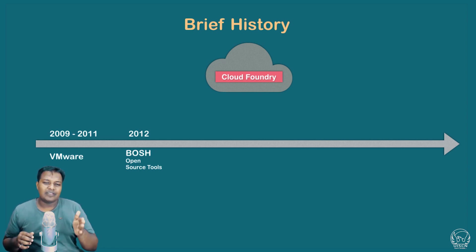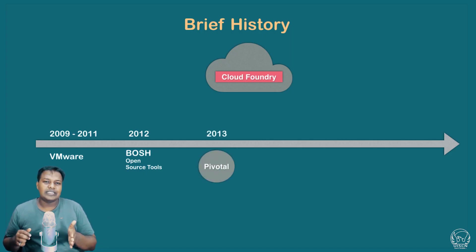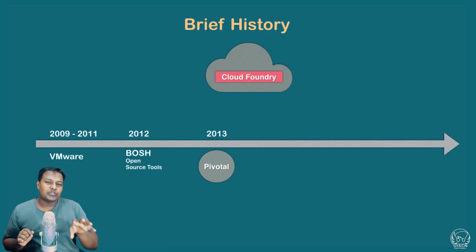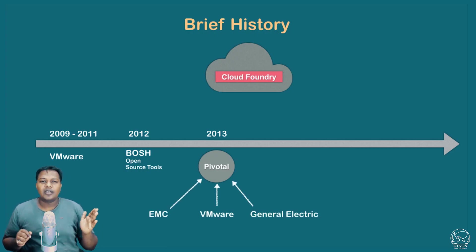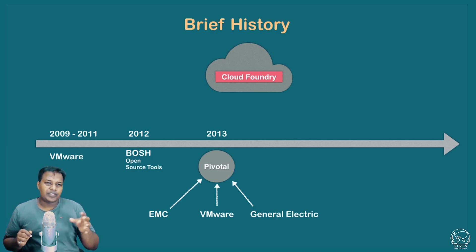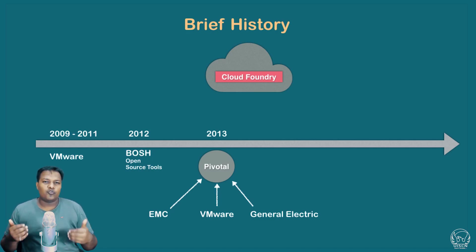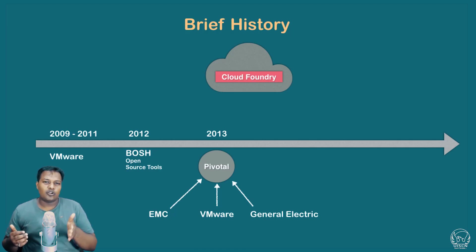In 2012 Bosch toolkit came into existence, and then in 2013 Pivotal was formed. Pivotal was an entity created and managed by VMware, General Electric, and EMC. They all were managing Pivotal, and the Cloud Foundry project then got shifted inside Pivotal.